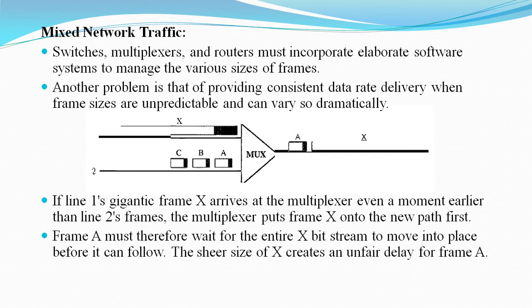Next is mixed network traffic. The variety of frame sizes makes traffic unpredictable. Switches, multiplexers, and routers must incorporate elaborate software systems to manage the various sizes of frames. A great deal of header information must be read and each bit should be counted and evaluated to ensure the integrity of every frame. Another problem is that providing consistent data rate delivery when frame sizes are unpredictable can be very dramatic.